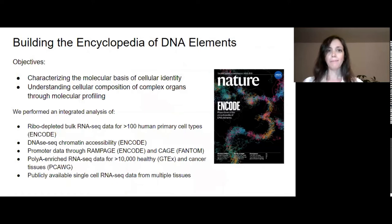As part of the ENCODE project, whose main objective is to build an encyclopedia of DNA elements, meaning classifying all sequences in the human genome and annotating function, we pursued two main objectives. The first was to characterize what makes each cell type different at the molecular level, and then use the cell type-specific molecular signatures to understand how cell types are distributed to form complex organs. For this, we performed an integrated analysis of thousands of datasets from ENCODE, from other consortia such as GTEx, and from other published studies.